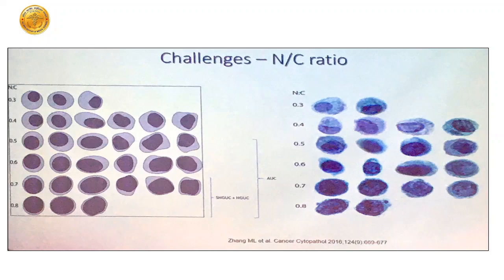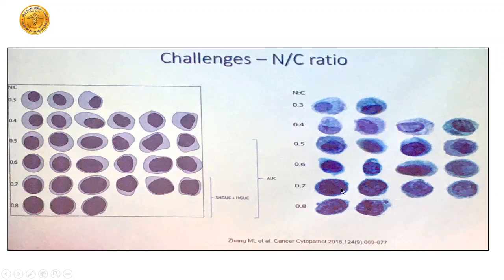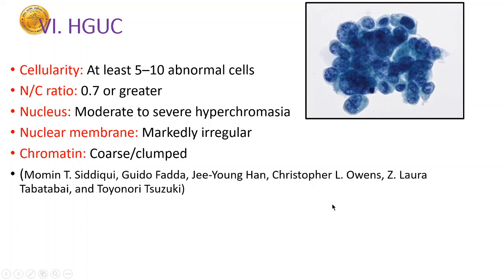All of this is done by eyeballing — there is no measurement involved. Zhang et al. gave a visual analog approach and said that the N:C ratio when calling suspicious for high grade urothelial carcinoma is more than 0.5 to 0.7. So at 0.4 it was normal; more than 0.5 was AUC — atypia in urothelial cells. When we come to 0.7, meaning more than 70% of the cellular area is occupied by the nucleus, we are moving to the high grade categories.